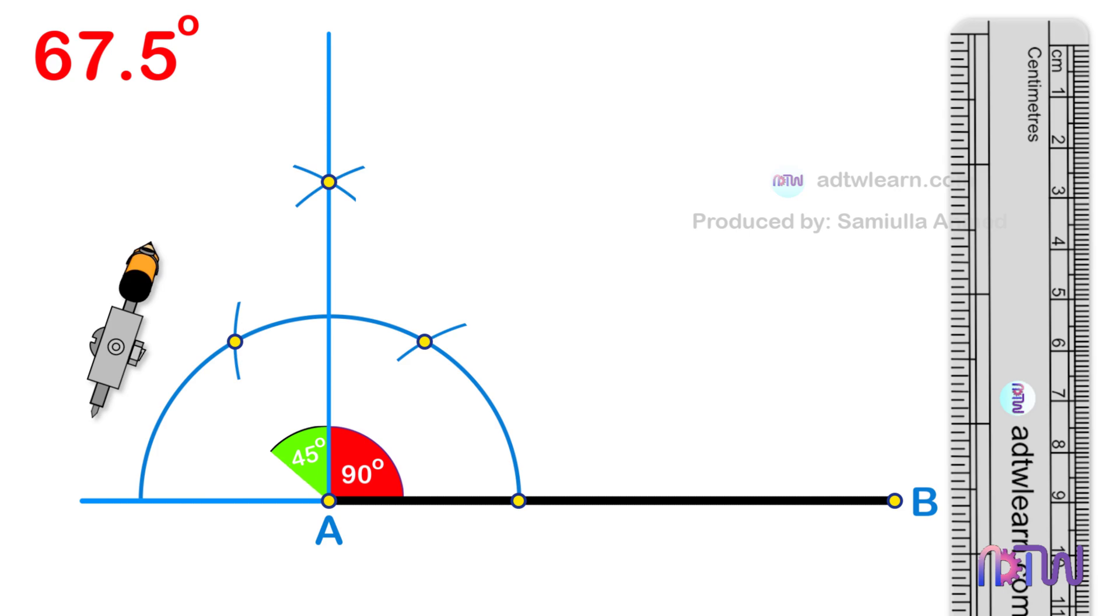Therefore, we need to divide this 90 degree angle in half. To do so, take a compass, and using these two points as the centers, cut arcs as shown.